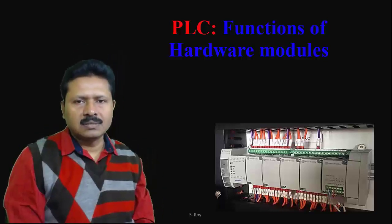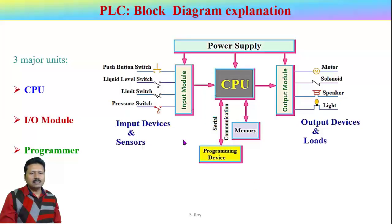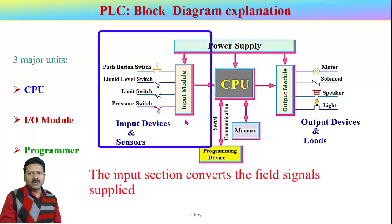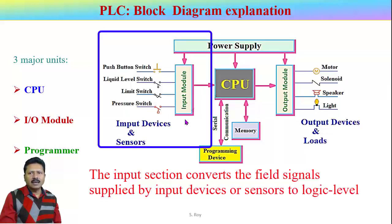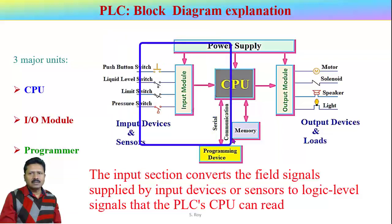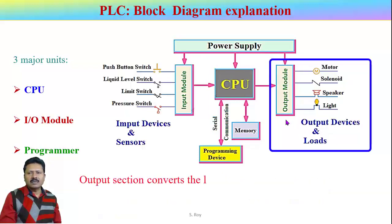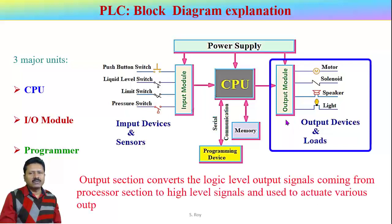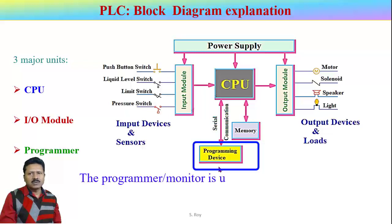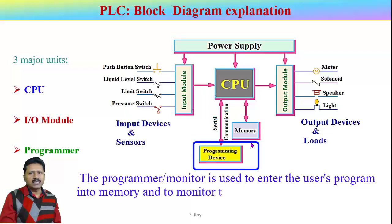This is the block diagram representation of PLC. The main sections of a PLC are CPU, input module, output module, and programmer. The input section converts field signals from input devices and sensors to logic level signals that the PLC CPU can read. The processor reads these inputs, processes the signals, and prepares the output signal as per the program. The output section converts logic level output signals from the processor to high level signals to actuate output field devices. The programmer or monitor is used to enter the user program into memory and to monitor execution of the program.